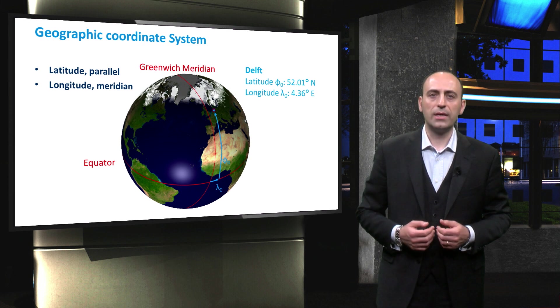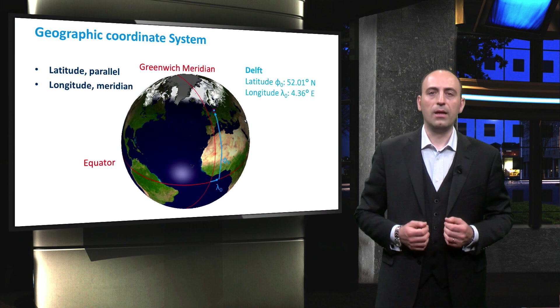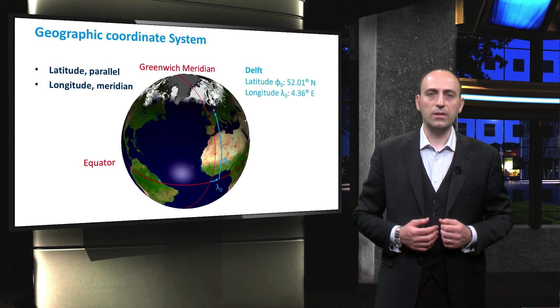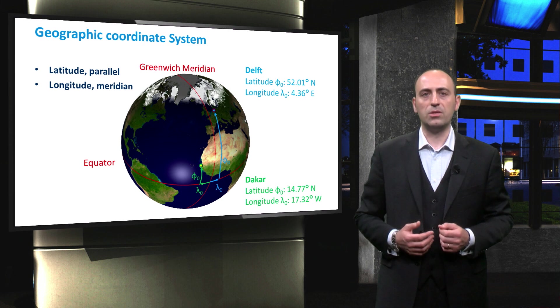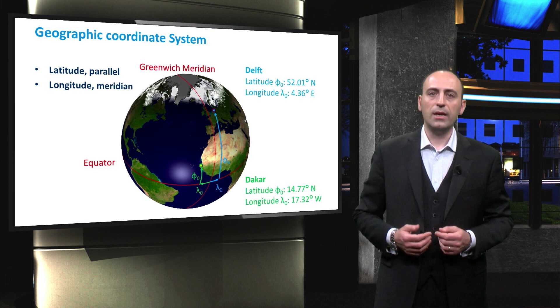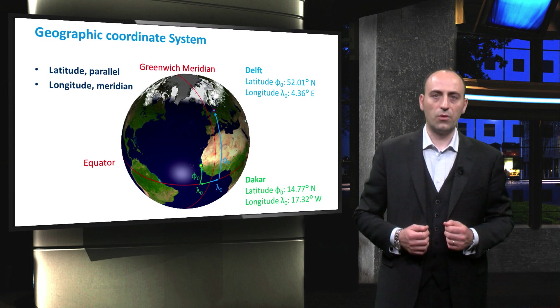Here is shown the example of Delft, which I am now, and which is located in the northern hemisphere to east of the Greenwich meridian. This other city is Dakar, and it is always in the north hemisphere, but like Delft, it is located to the west of the prime meridian.